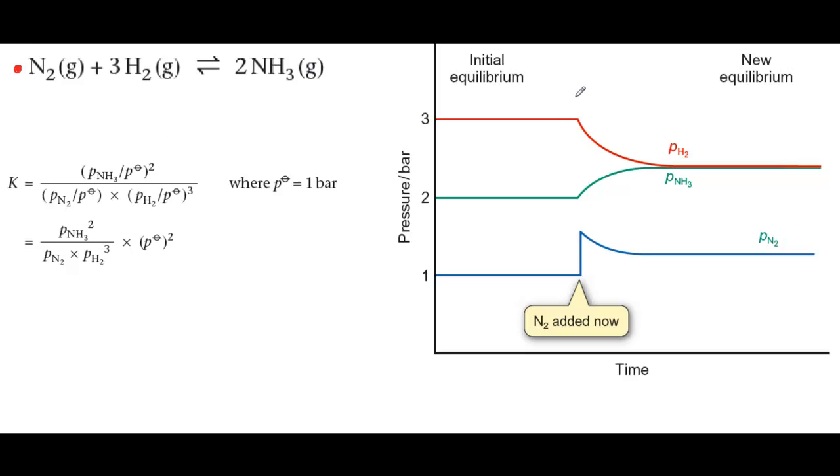The graph in figure 15.5 shows what happens when an initial equilibrium mixture is disturbed by adding nitrogen, while keeping the total pressure constant. You could use Le Châtelier's principle to predict that the reaction would move to the right when the additional nitrogen is added.